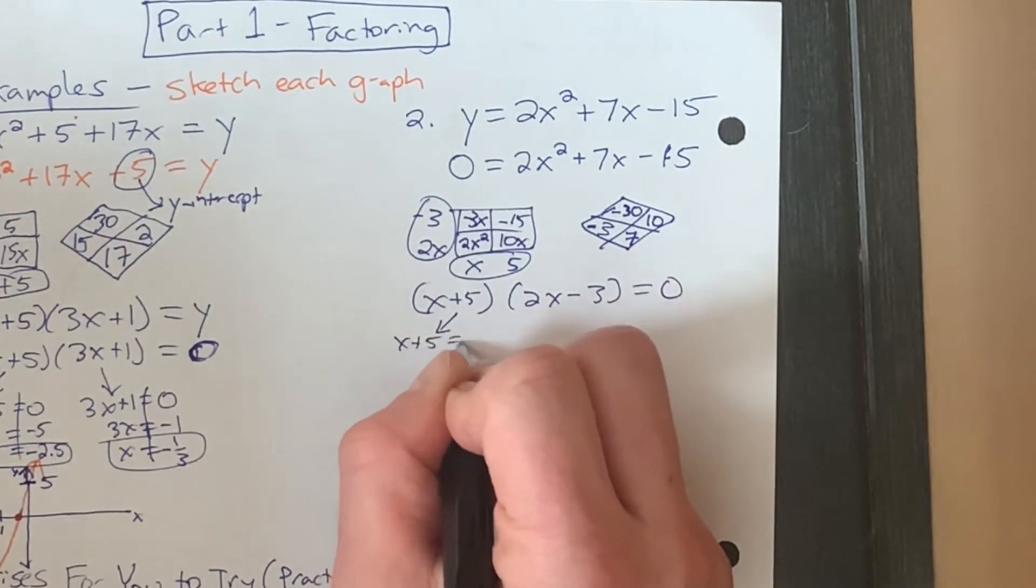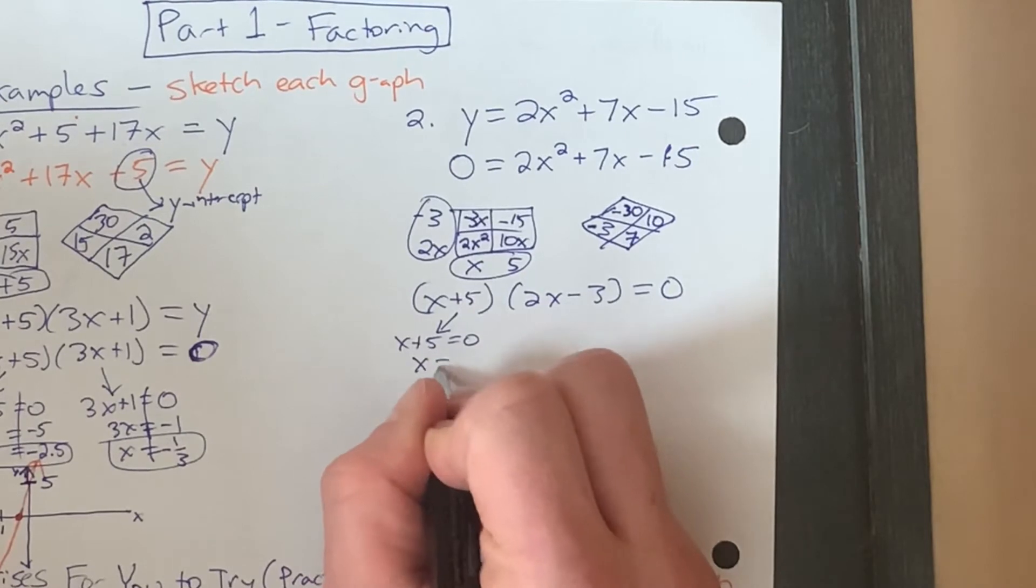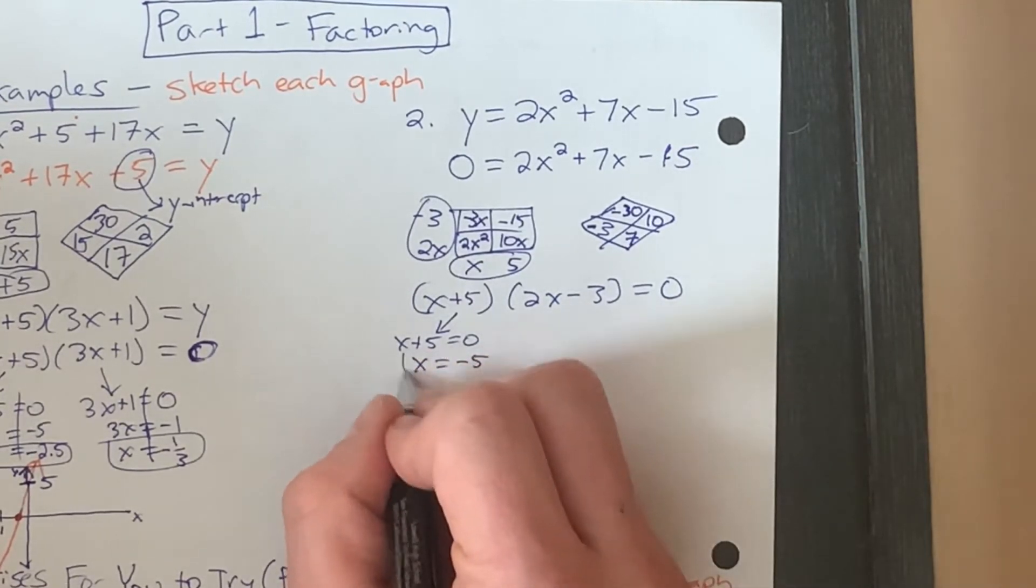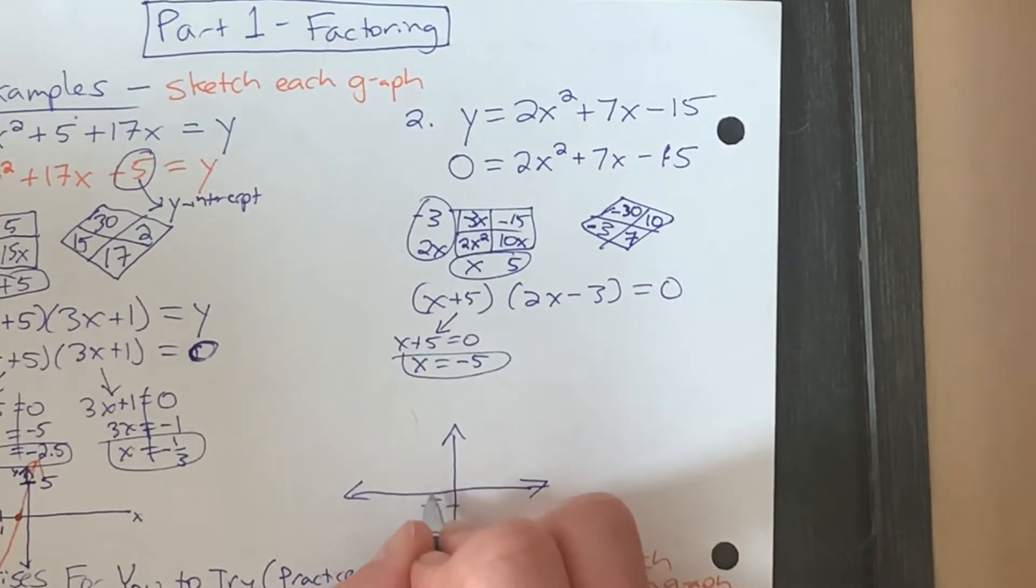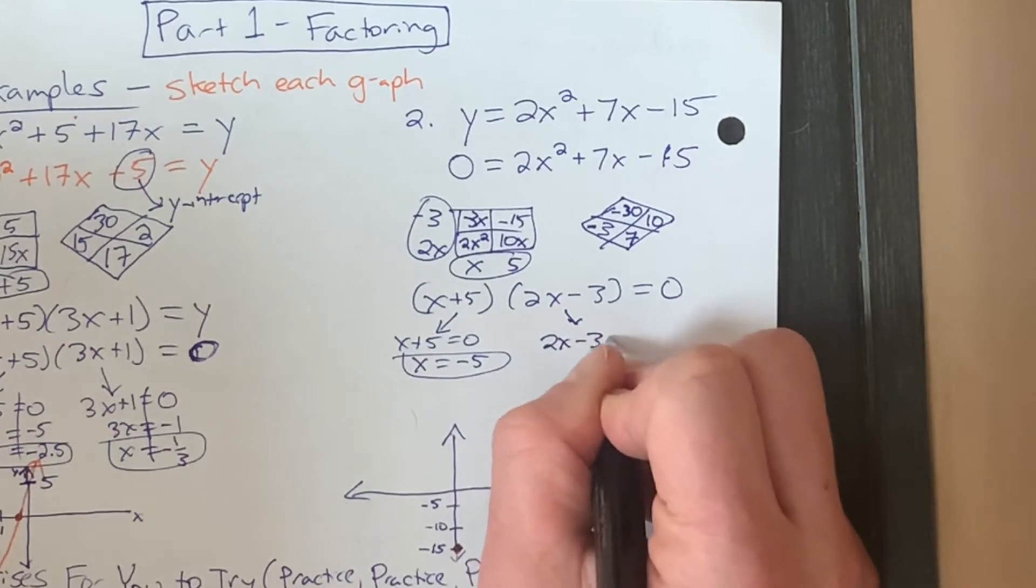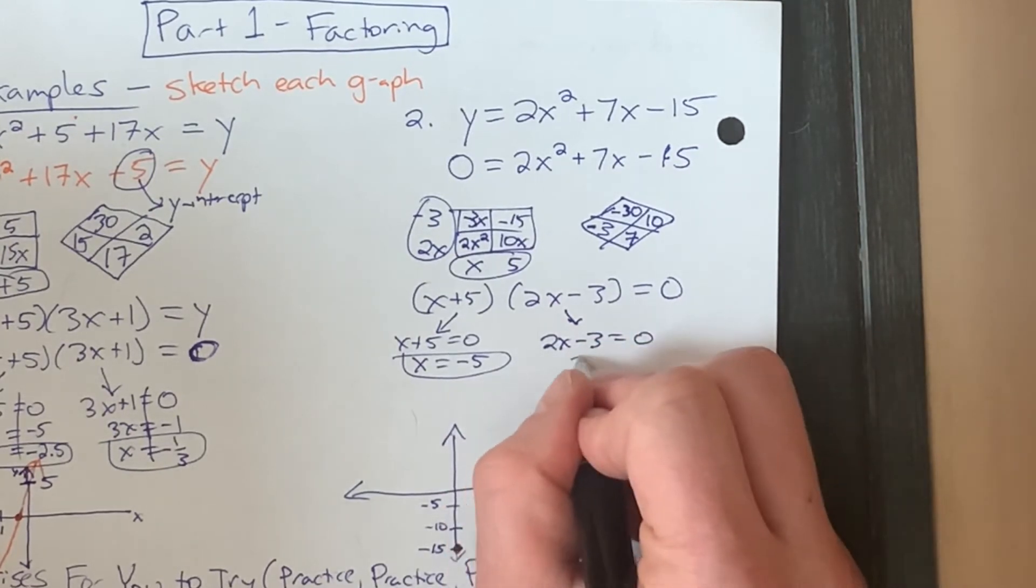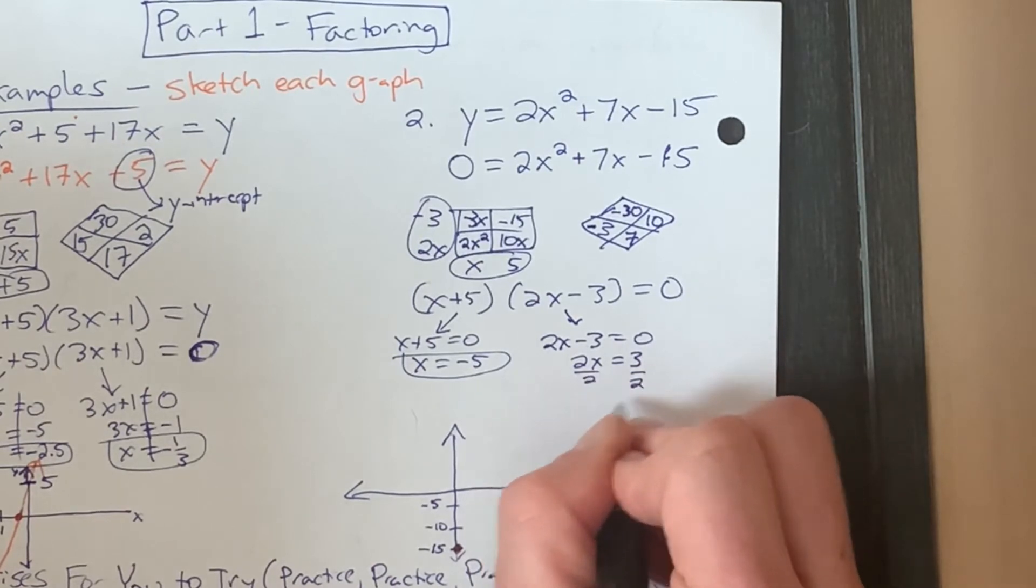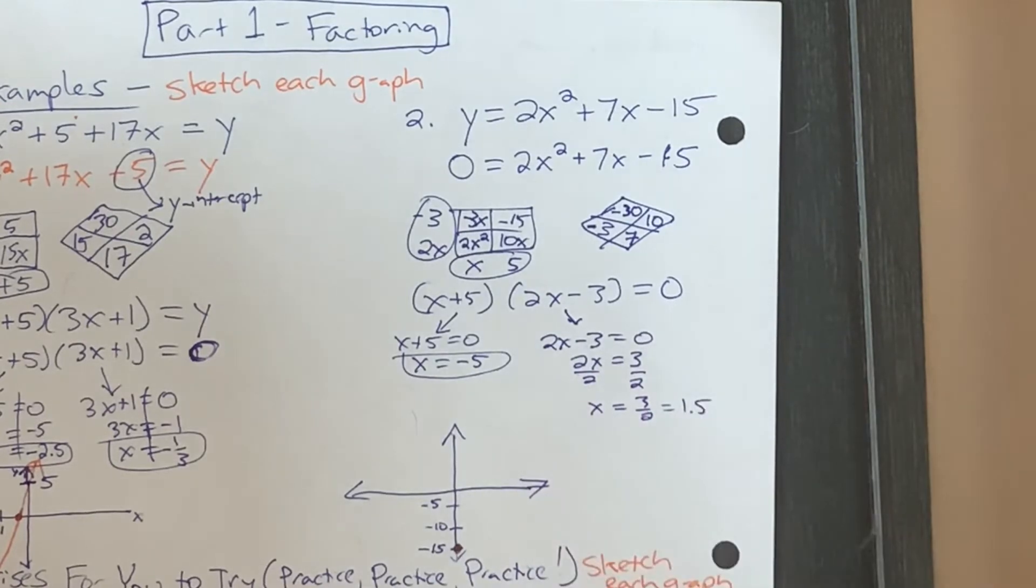Okay, x plus 5 equals zero. And that's really easy, because if you just subtract 5 from both sides, we get negative 5 for one of our x-intercepts. So let's do that. I'll put that later just to see what this looks like. 2x minus 3 equal to zero. Add 3 to both sides. We get 2x equal to 3. Divide both sides by 2. x equals 3 halves. Or let's just make that decimal 1.5.